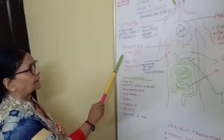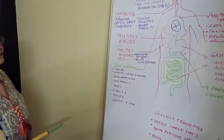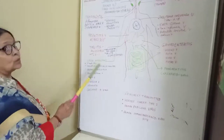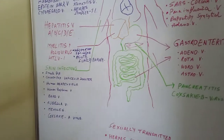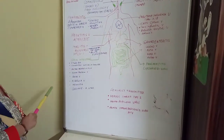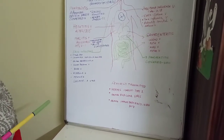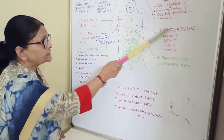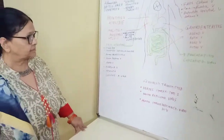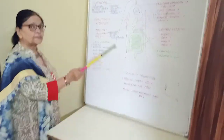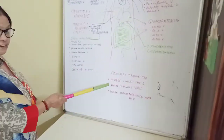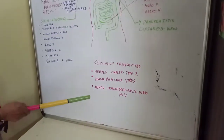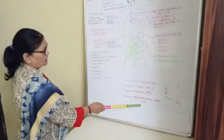Hepatitis is caused by viruses A, B, C, D, and E. What is myelitis? Myelitis is caused by poliovirus, with symptoms of inflammation of the spinal cord and acute flaccid paralysis. Name the diseases of the stomach and intestines — viral gastroenteritis. Name three sexually transmitted viral diseases: herpes, human papilloma virus causing cervical cancer, and HIV causing human immunodeficiency disease.